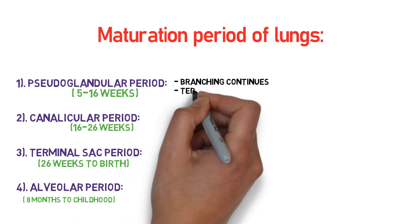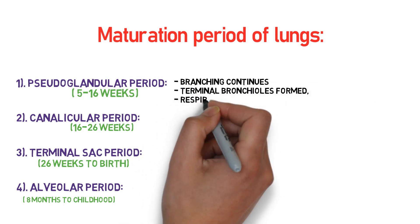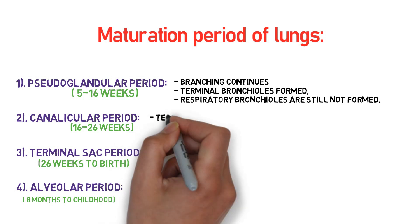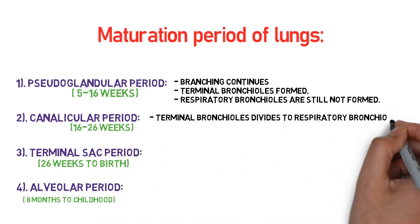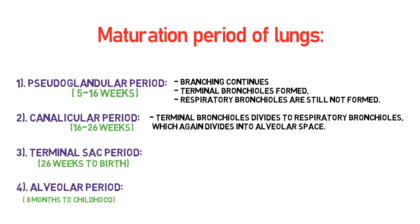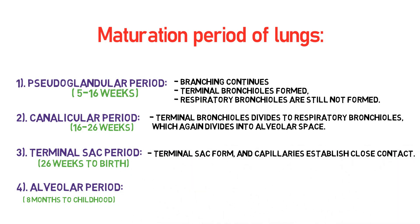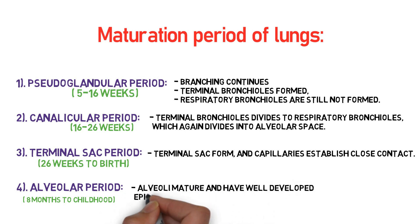In the pseudoglandular period, branching continues, terminal bronchioles are formed, and respiratory bronchioles are still not formed. In the canalicular period, terminal bronchioles divide into respiratory bronchioles, which again divide into alveolar spaces. In the terminal sac period, terminal sacs form and capillaries establish close contact. In the alveolar period, alveoli mature and have well-developed epithelial-endothelial contact.